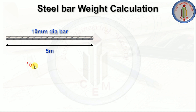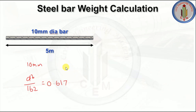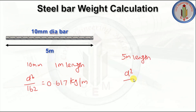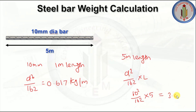Now let's calculate for the 10 mm dia bar. Using d² divided by 162, we get 0.617 kg per meter. For 5 meter length: 10² divided by 162 multiplied by 5 gives us 3.086 kg. That is the weight of a 10 mm dia bar for 5 meter length.